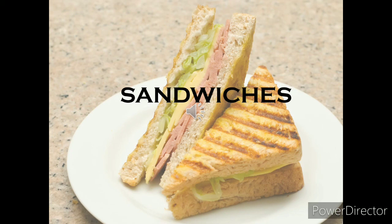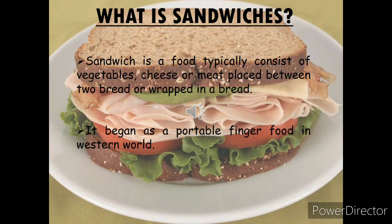In this video, we are going to study sandwiches in detail. We will cover the definition, the classification, and the different types of sandwiches that are served or available. A sandwich is a food that typically consists of vegetables, cheese, or meat placed between two slices of bread or wrapped in bread. Sometimes the filling is wrapped inside, as in the case of Mexican sandwiches. Sandwiches began as a portable finger food in the Western world, and with rapid industrialization and the speed and tempo of work, their use as a meal in itself is becoming popular. They are served at tea parties, barbecues, suppers, with coffee, and used in picnic baskets.